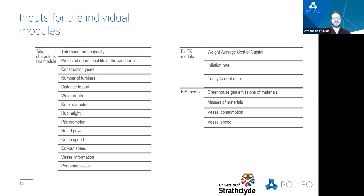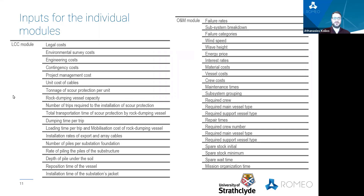The tool, as we can see in this slide, requires a number of inputs for each of its individual modules in order to be able to calculate the variation of the values of KPIs as a result of the alternative O&M strategies that will be tested.